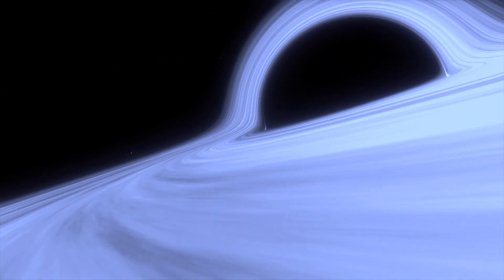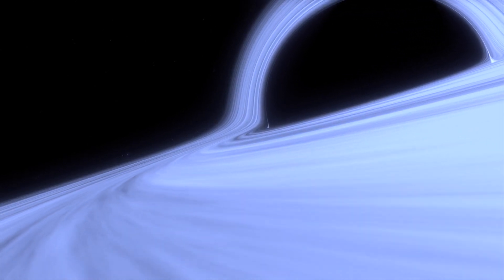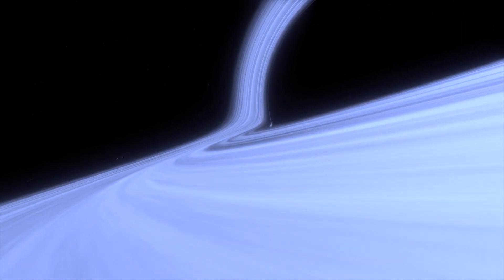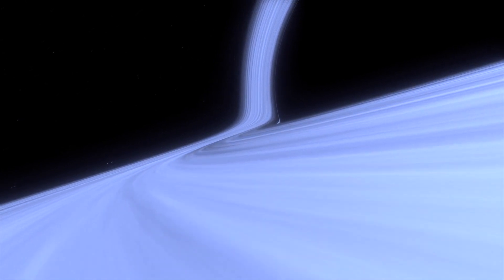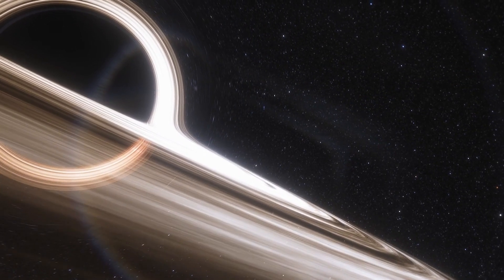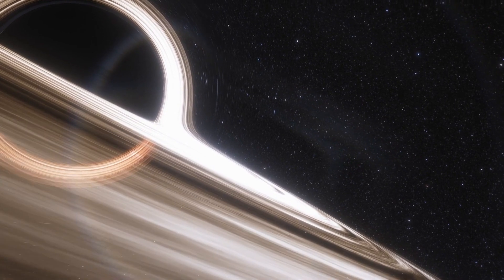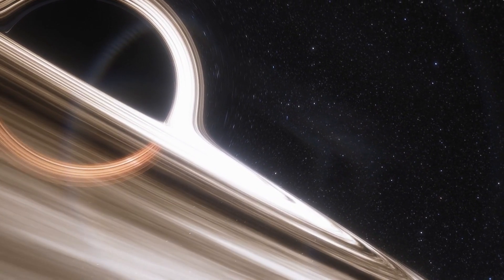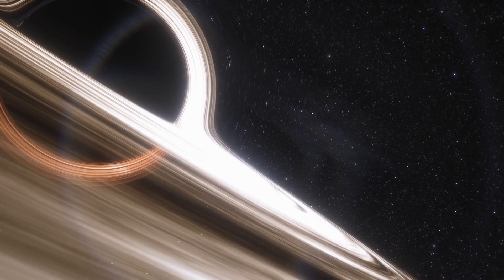However, after analyzing and surveying A2261-BCG even further, scientists found something interesting. The diffused core of the galaxy seems to house four little knots of light, causing some to think that the black hole's gravitational pull is keeping them there.